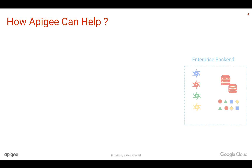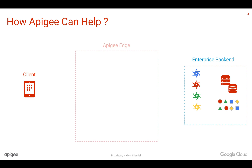To simplify things, let's say you have an enterprise backend and you have a client. Apigee Edge can sit in between your client and the backend system, where you can create API proxies which will be exposed as APIs to the client. Let's say you expose the login API through the Apigee Edge platform.